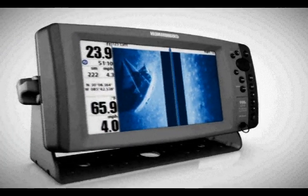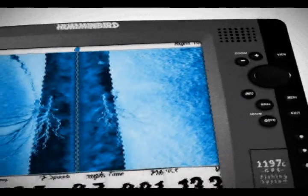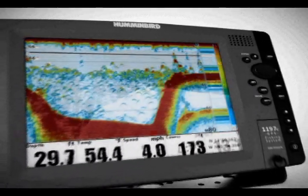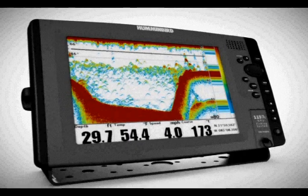Humminbird fishing systems use sonar technology to help anglers locate and catch more fish. Whether using exclusive Humminbird side imaging, down imaging, or switchfire sonar, the principles remain the same.